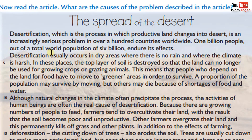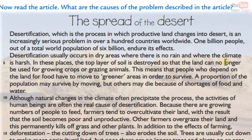Desertification usually occurs in dry areas where there is no rain and where the climate is harsh. In these places, the top layer of soil is destroyed so that the land can no longer be used for growing crops or grazing animals.